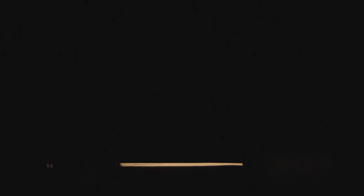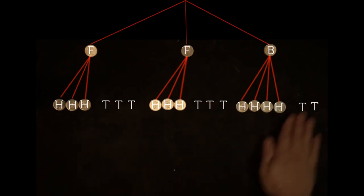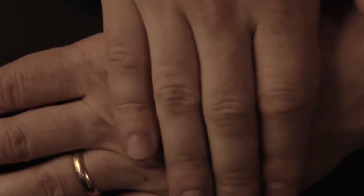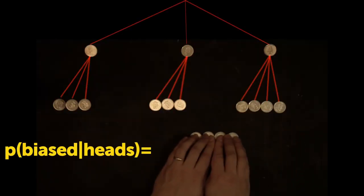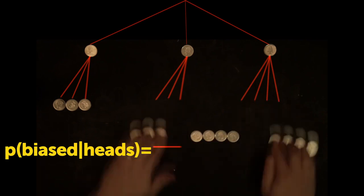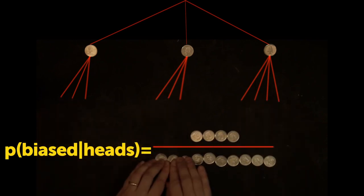When Bob shouts the result, Heads, this new evidence allows us to trim all branches leading to tails, since tails did not occur. So, the probability that he chose the biased coin, given heads occurred? Well, four leaves can come from the biased coin divided by all possible leaves. Four divided by ten, or forty percent.